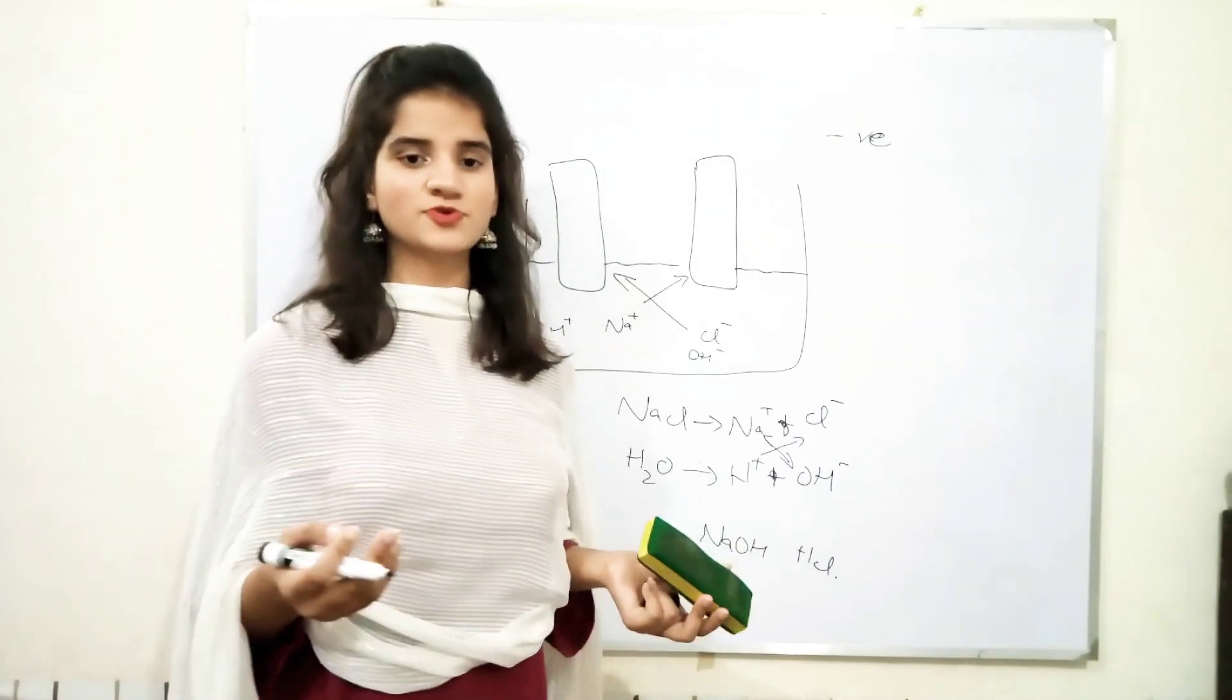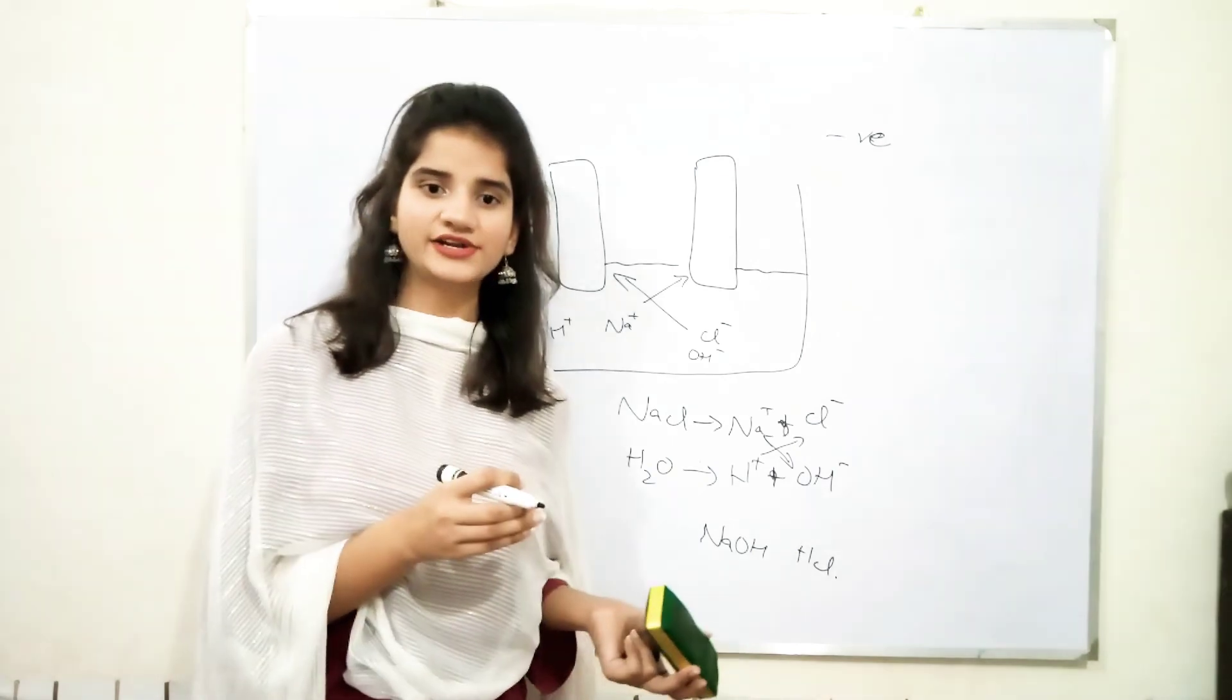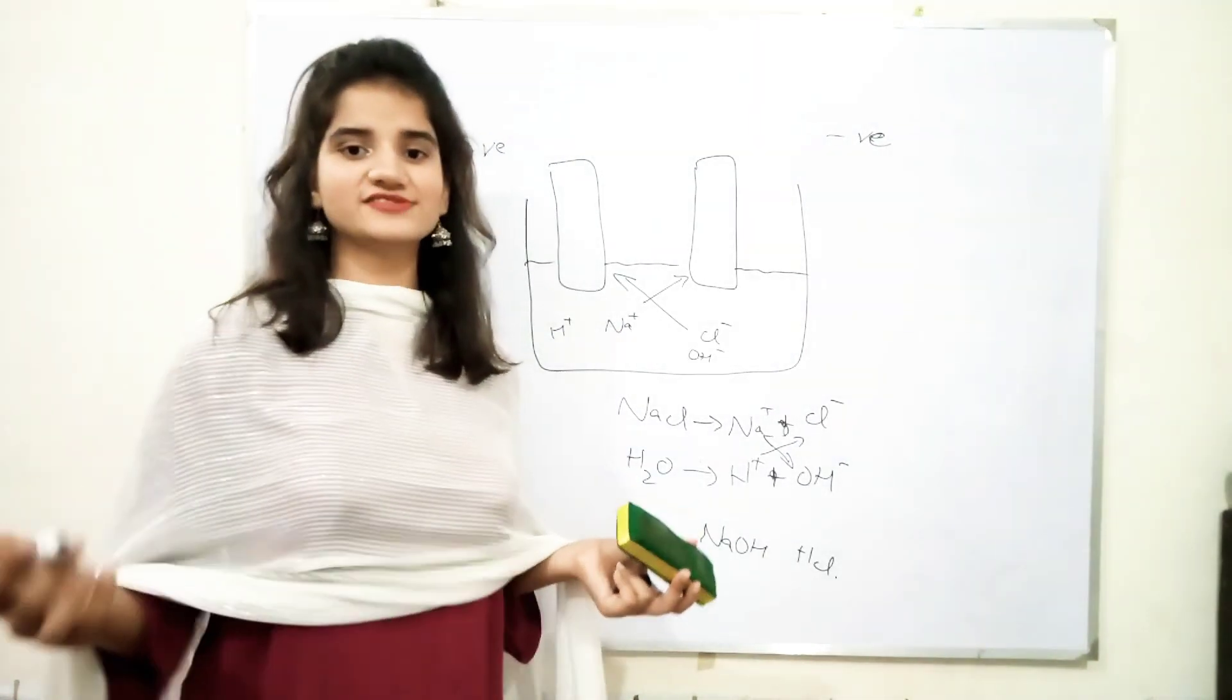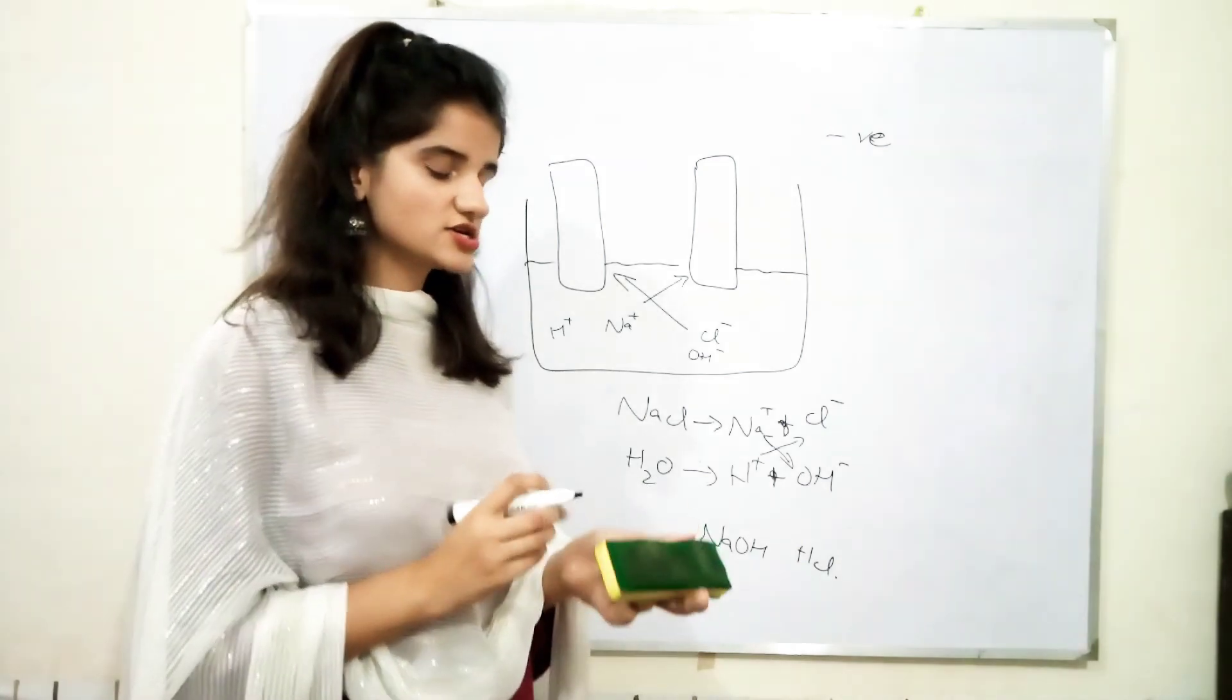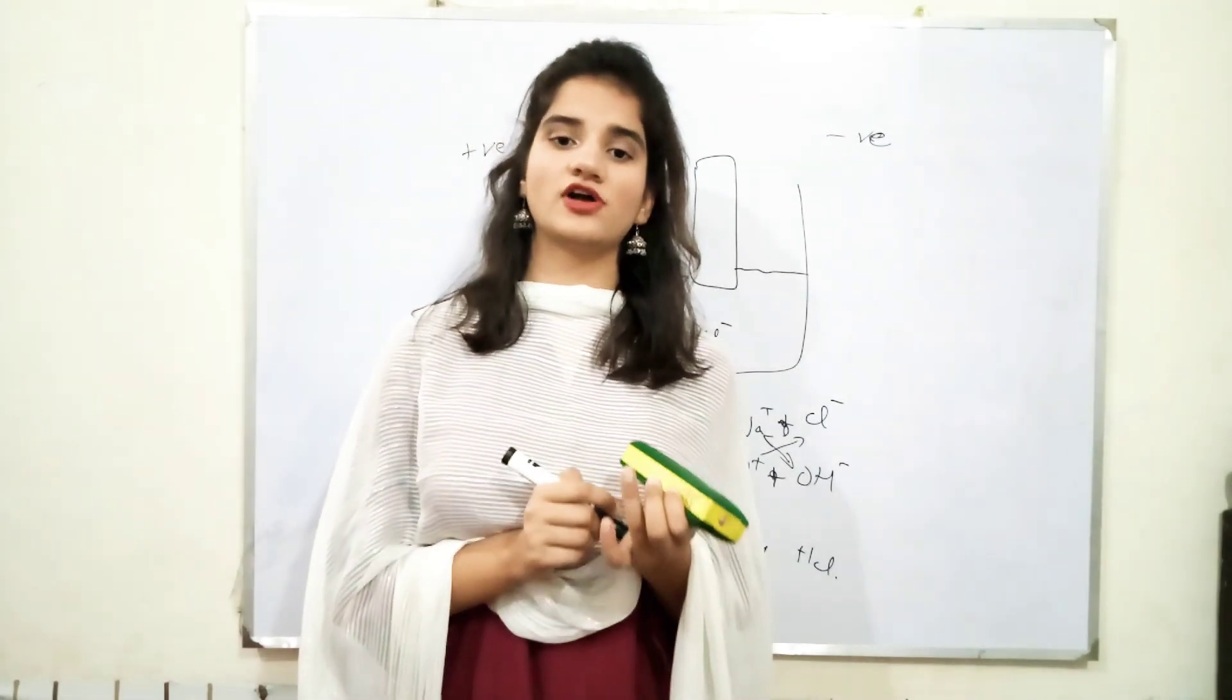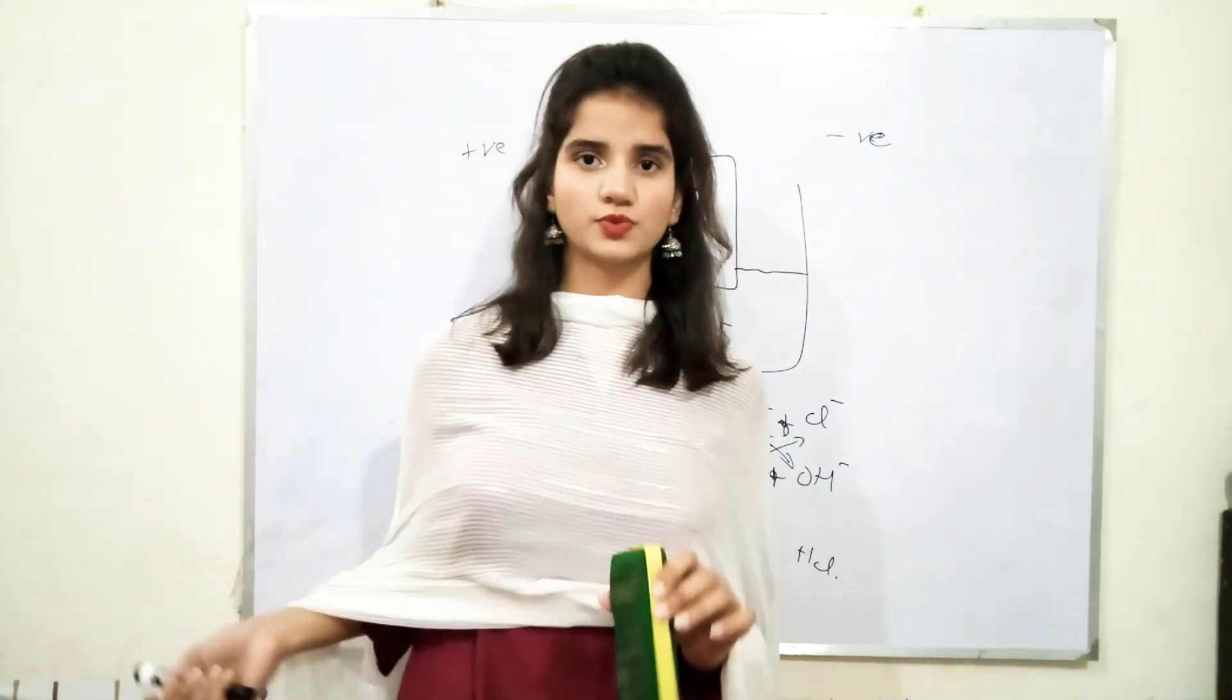Now, in this process, electrons enter solution at cathode and give at anode. This two-way migration of ions would be considered as convection. Convection is a very important process which we have already studied and this process also occurs in human body. Thank you very much.